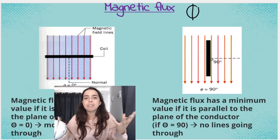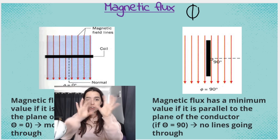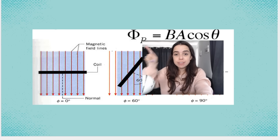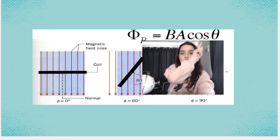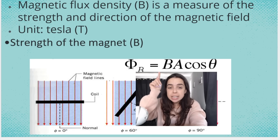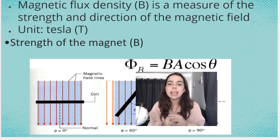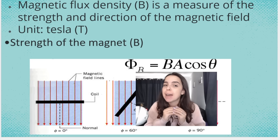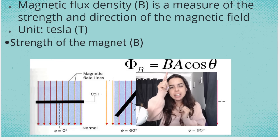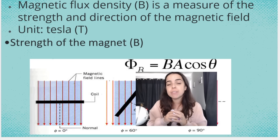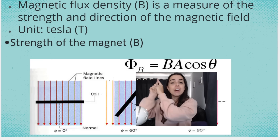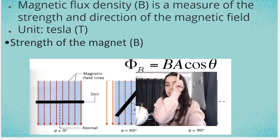Now let's look at this formula to calculate magnetic flux: phi = B × A × cos(θ). Let's look at what B, A, and cos of the angle each mean. B is magnetic flux density — it's a measure of the strength and direction of the magnetic field. The unit is Tesla (T). B is essentially the strength of the magnet: if we have a stronger magnet, B is bigger. The stronger the magnet, the greater the magnetic flux.